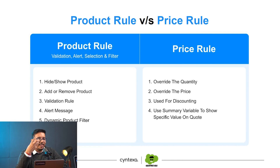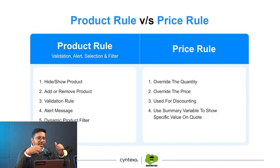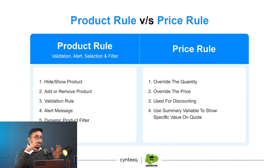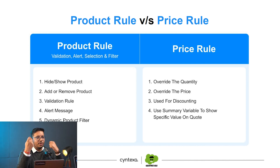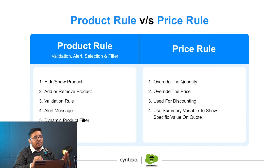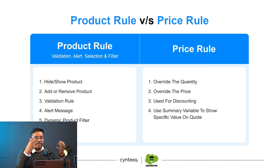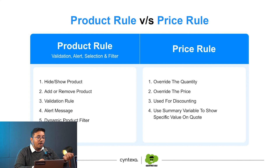We can also add or remove products. For example, if we're adding a particular product and there's a requirement that a maintenance kit needs to be sold with it, we can do that. Then we have validation rules, which ensure that a certain product cannot be sold with a particular configuration — a particular product cannot be sold together with some different product. Then we have alert messages notifying that it's not best practice to sell this particular product, or not best practice to sell this many quantities — like when you're only selling three laptops, you should not be selling six mice or six keyboards.